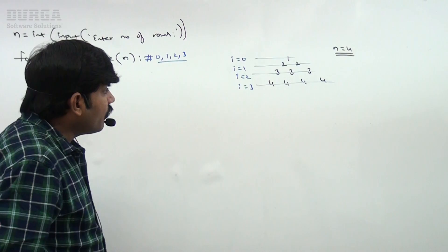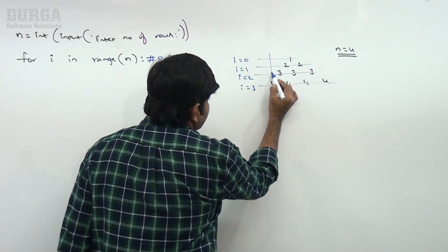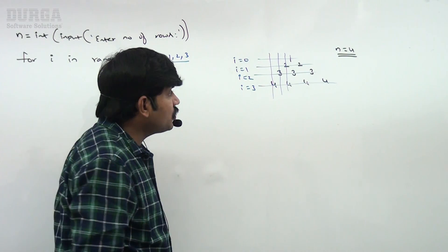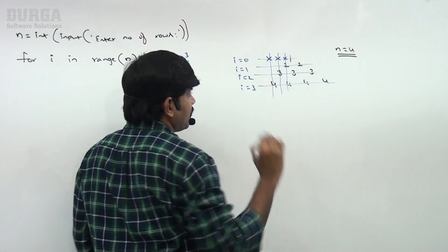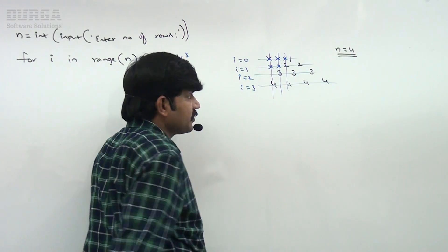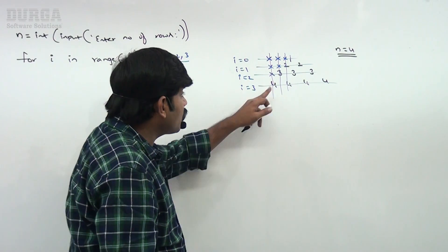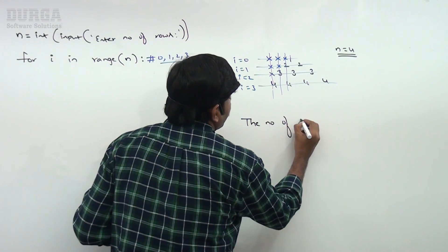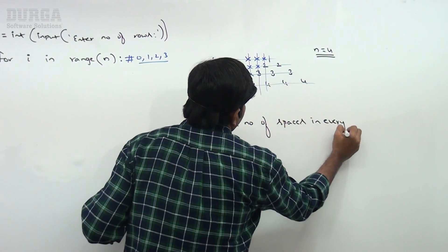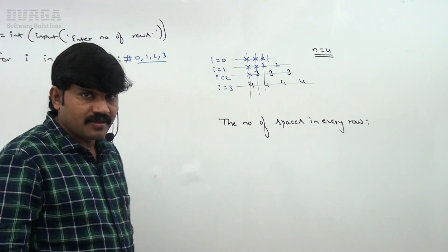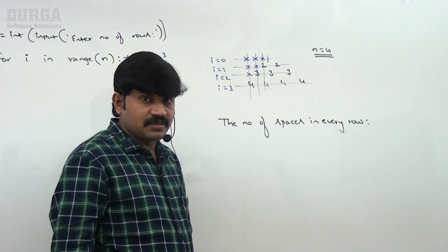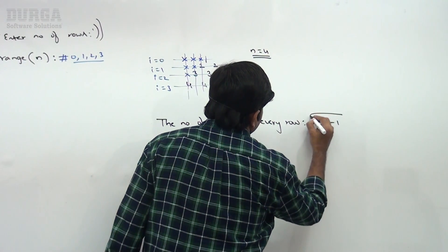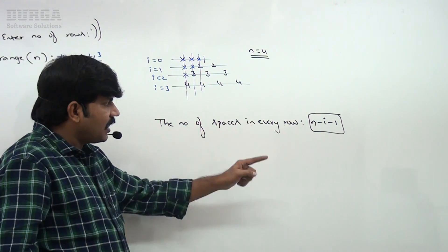Now observe the spaces. In the first row there are 3 spaces, in the second row 2 spaces, in the third row 1 space, and the fourth row has no spaces. The number of spaces in every row is N minus i minus 1 — just as we covered in the last example.